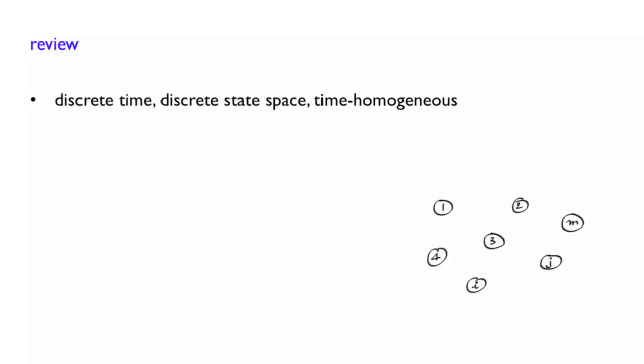These are the simplest cases and are the best to build our intuition. So the state space is discrete, here finite, with m states.